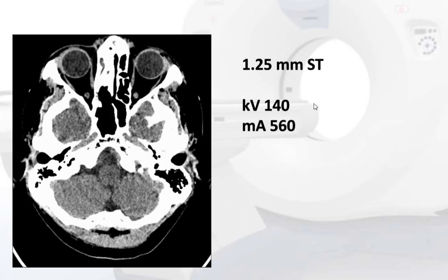For a head CT, the KV is the same throughout the scan — they use higher KV of 140 for head. KV will not change during the scan no matter where they are scanning. For example, in this scan the MA was 560 for 1.25 millimeter slice thickness.